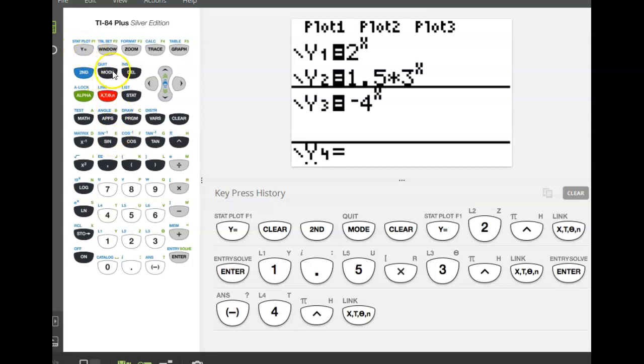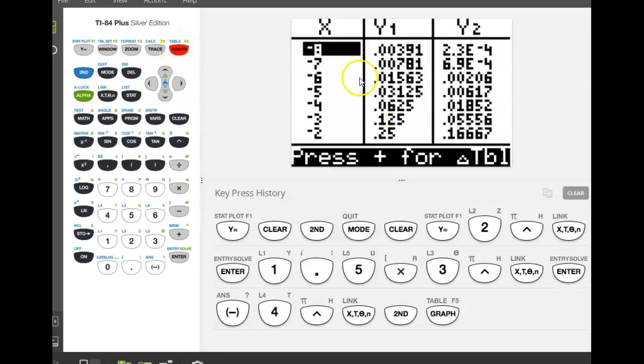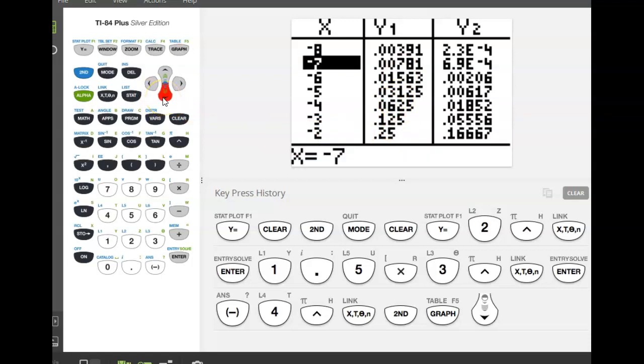Now, if you look up here where it says graph, if you see here in blue it says table. So because it's in blue, I'm going to hit my blue button, my second button, and then I'm going to hit the graph, so that way it can take me to the table. And you can see here, it's got Y1, it inputted all of these values, negative 8, negative 7, and so on, and then based on the first rule, here's what you should get.